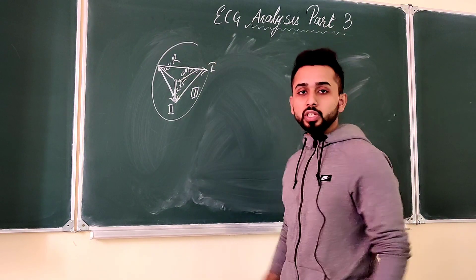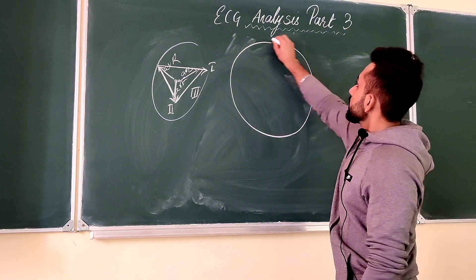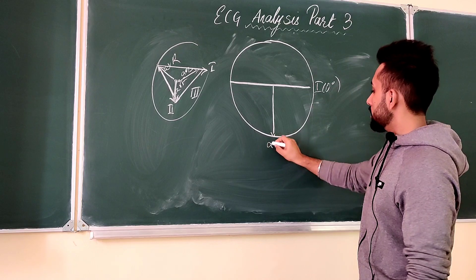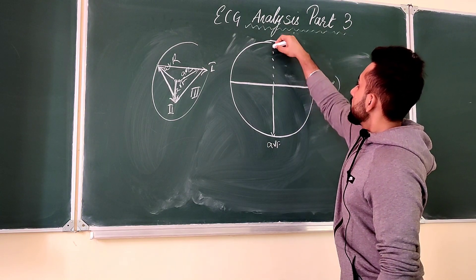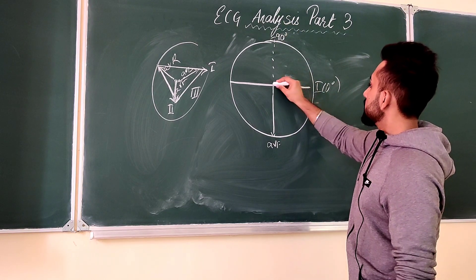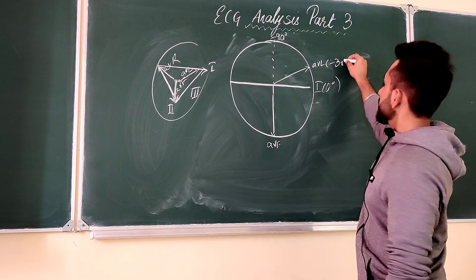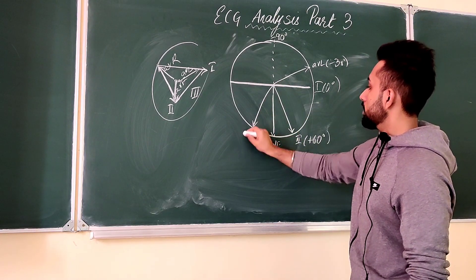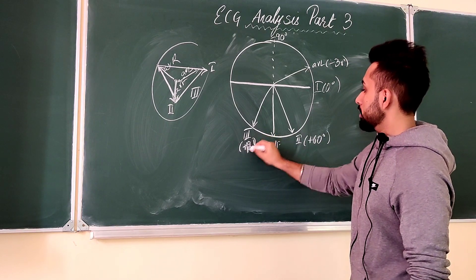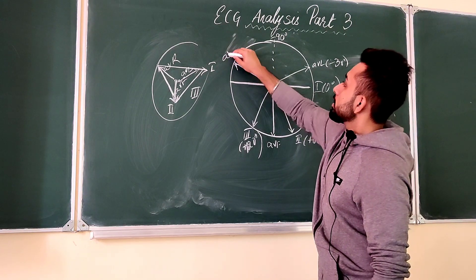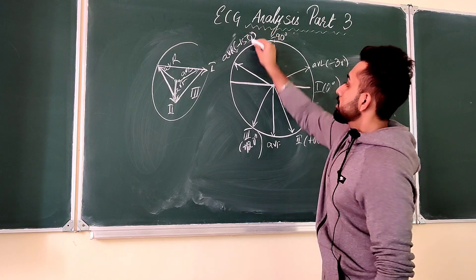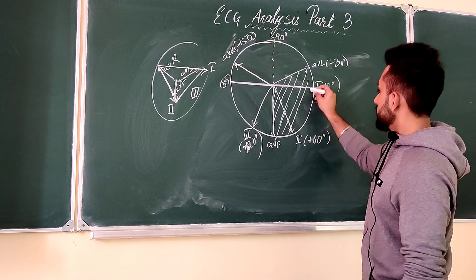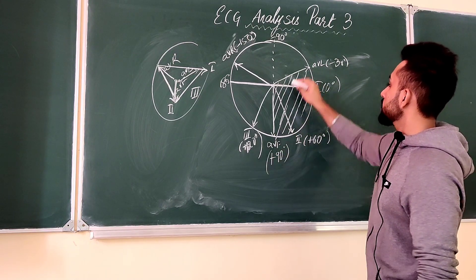If we try to plot the same information in the form of a pie chart, Lead 1 stands right at 0 degrees. Lead AVF is at negative 90 degrees. AVL is at minus 30 degrees. Lead 2 is at positive 60 degrees. Lead 3 is at positive 120 degrees.